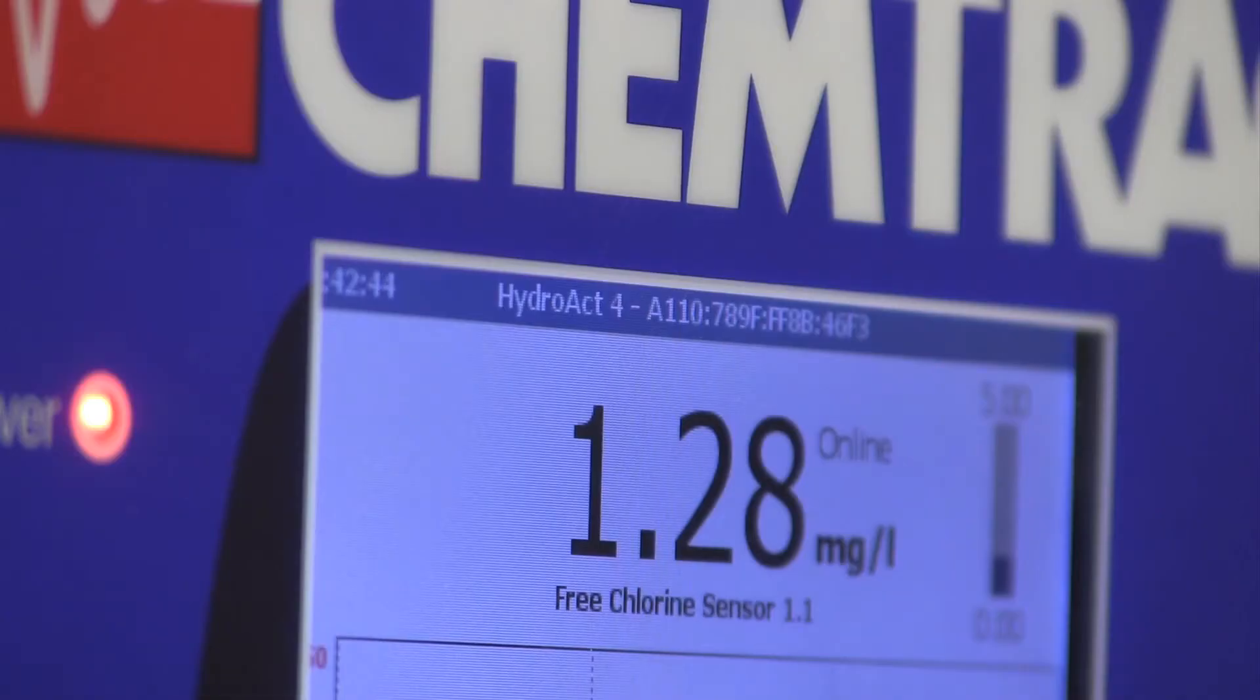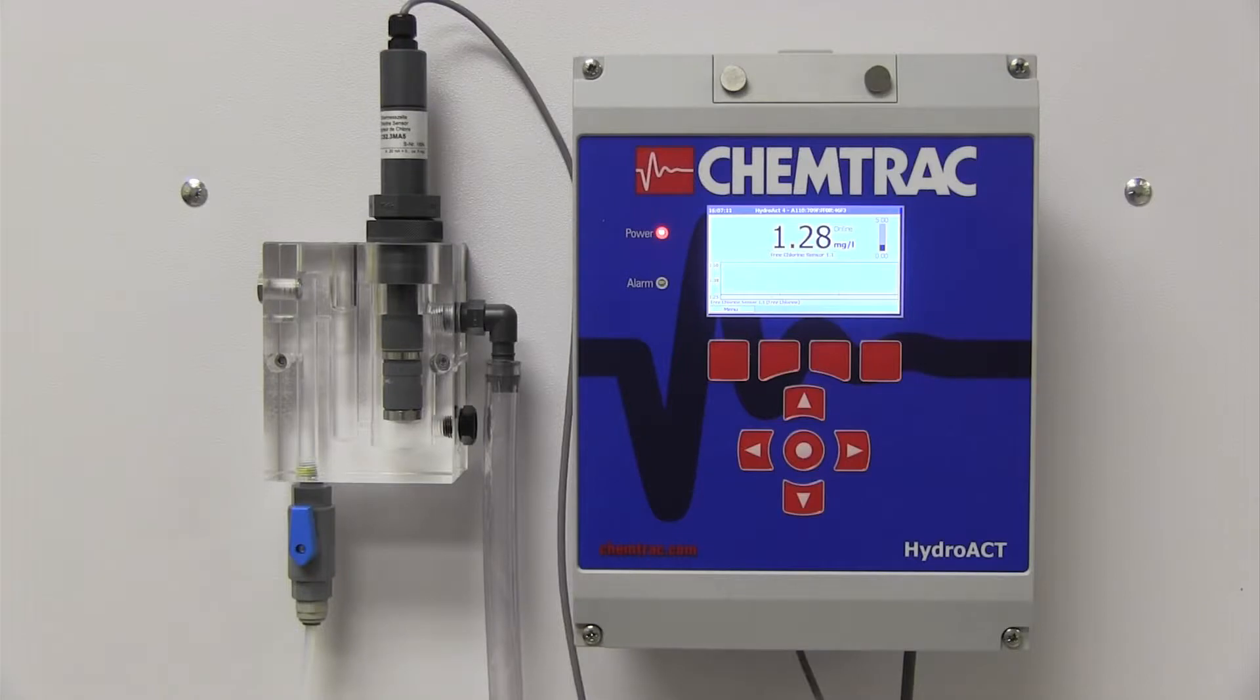We will demonstrate the easy setup and calibration of Chemtrax free chlorine monitor, which consists of a Hydroact analyzer, a free chlorine sensor, and a sample flow cell.